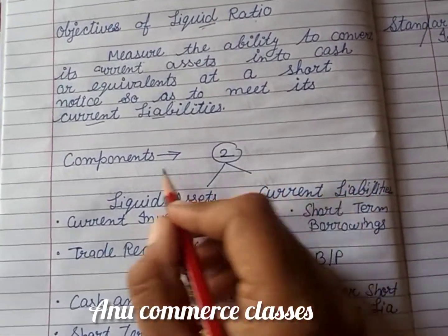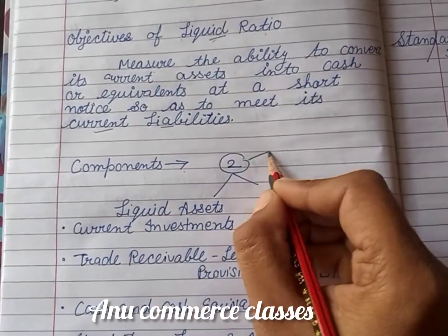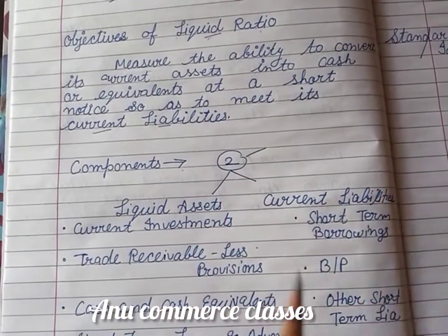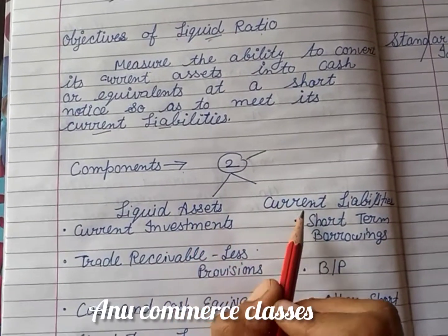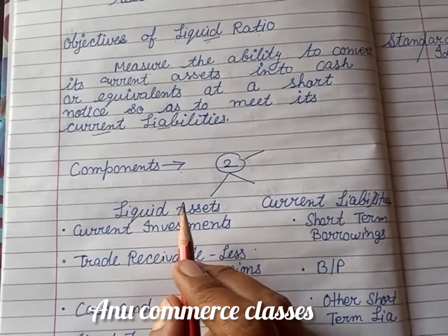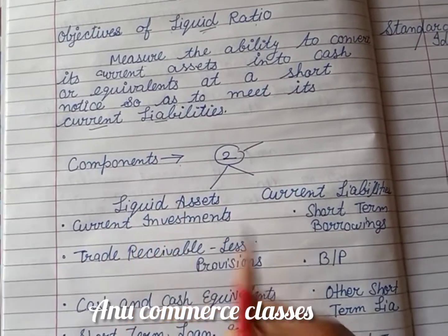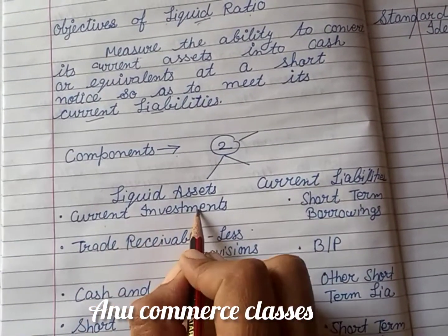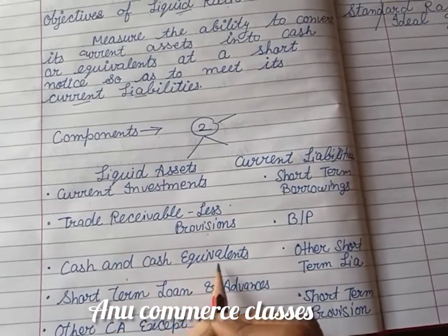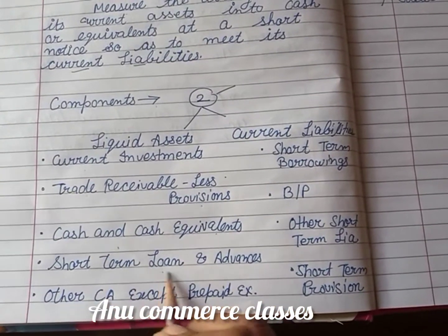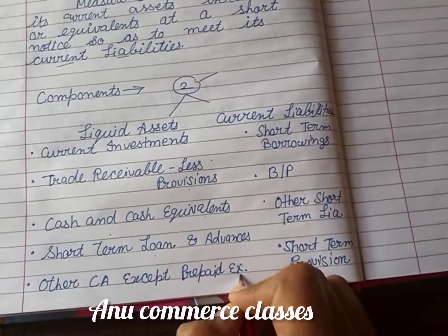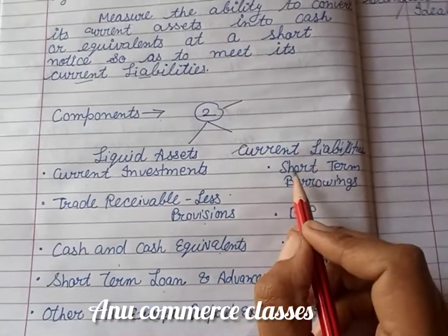There are two components of liquid ratio: liquid assets and current liabilities. Assets covered under liquid assets include current investments, trade receivables less provisions, cash and cash equivalents, short-term loans and advances, and other current assets except prepaid expenses.